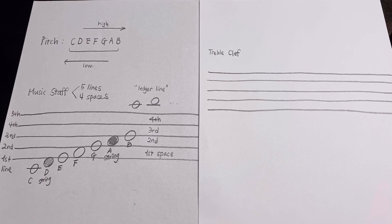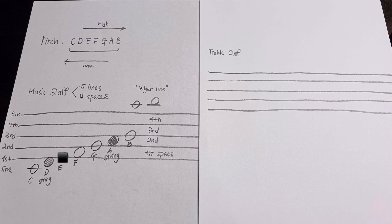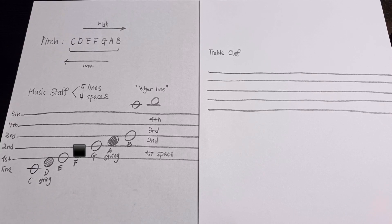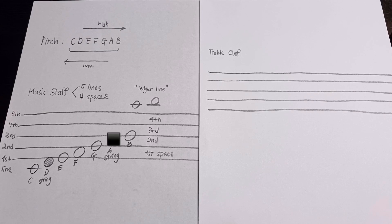I want to check the notes that we just tried on the violin in the music staff. We can play E with the first finger on D string. We play F with the second finger on D string. G with the third finger on D string. A with the fourth finger on D string. Everything was on D string.